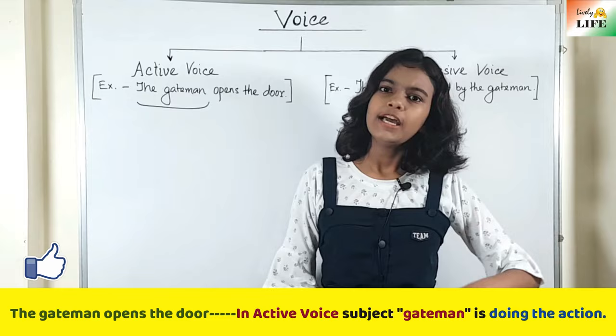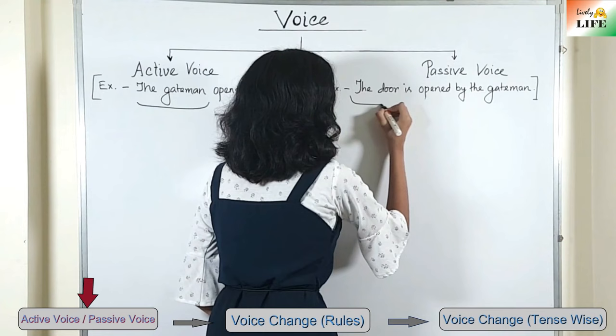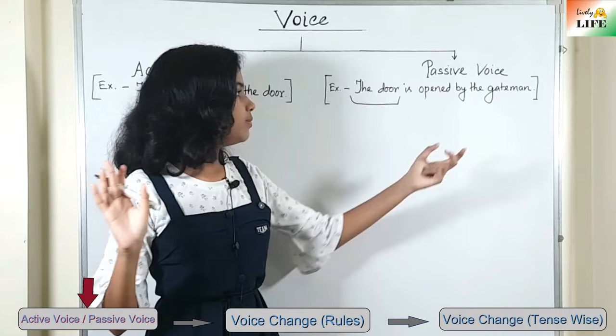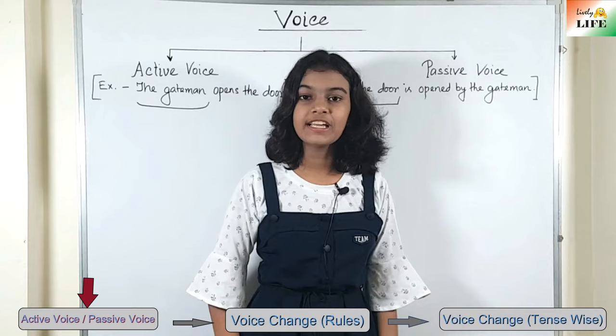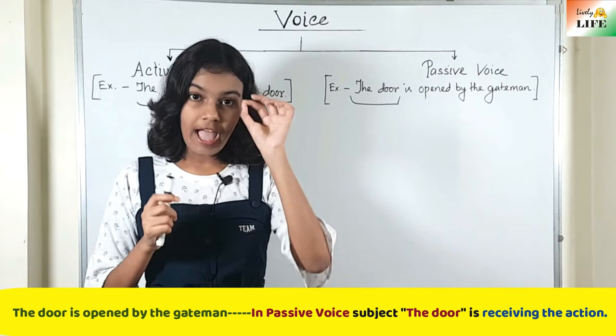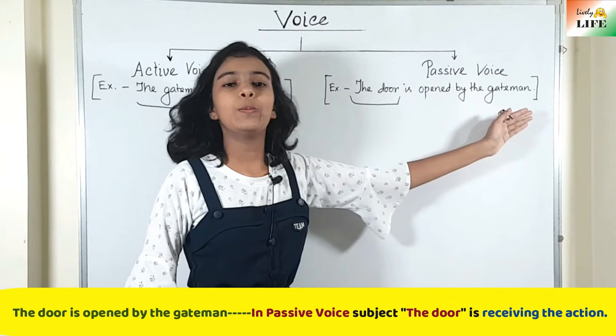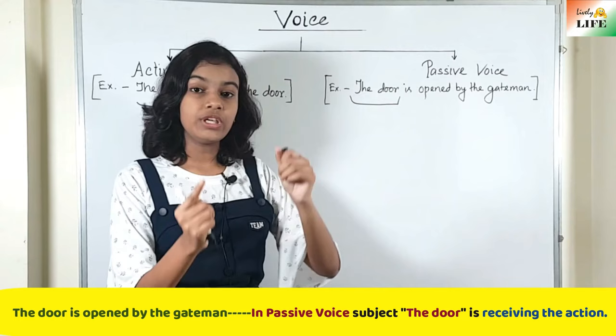Now let's move to passive voice. In passive voice, the example is: 'The door is opened by the gateman.' Here, 'the door' is the subject, 'is opened' is the verb, and 'the gateman' is the object. In passive voice, the subject is not the doer — the subject is the receiver of the action. The action is done on the subject. The door is opened by the gateman, meaning the action is performed on the door. This is passive voice.